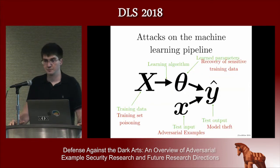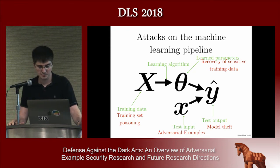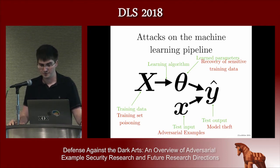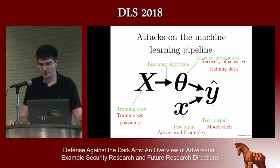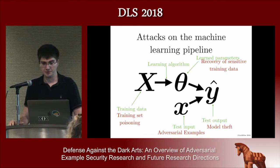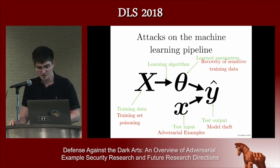In general, there are a lot of different ways an attacker can attack a machine learning algorithm. We have a pipeline where training data is consumed and turned into learned parameters, which are used to classify test inputs and produce outputs. Attackers can introduce training set examples that cause the model to learn wrong things — that's called training set poisoning. They can analyze learned parameters to steal the model, gain private information about the training set, or steal the IP encoded in the model. Even observing the outputs is sufficient to do model theft attacks.